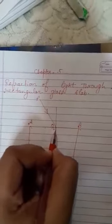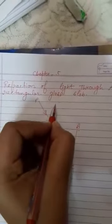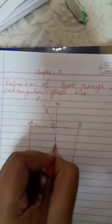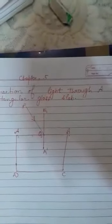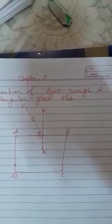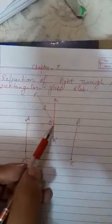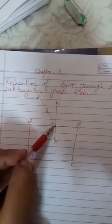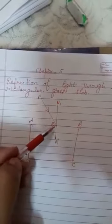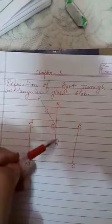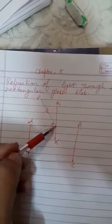We draw a perpendicular — a normal — N1 and N1' at the point of incidence O on the surface AB. This is the incident ray, this is the incident point, and we draw normal N1 and N1' on the surface AB.